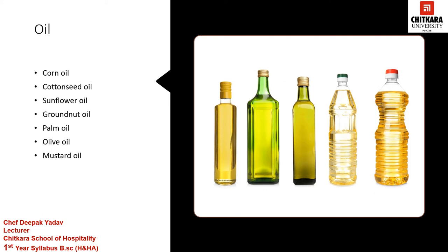Palm oil is the most widely produced oil in the world. It is made from the seed of the fruit of the palm. It has a reddish hue because of the presence of beta-carotene, which fades away when the oil is heated. It is a very stable oil and hence commonly used to make margarine. The oil is semi-solid at room temperature.